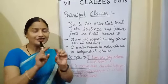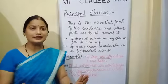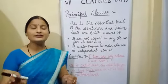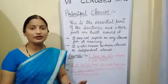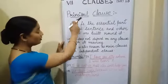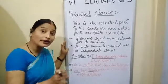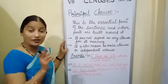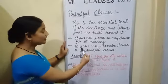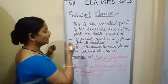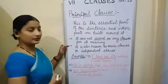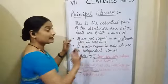Within a sentence, when we read the principal clause we are satisfied that the sentence is already complete. That's why it is called the principal clause, main clause, or independent clause. It is called independent because this clause does not depend upon any other clause.